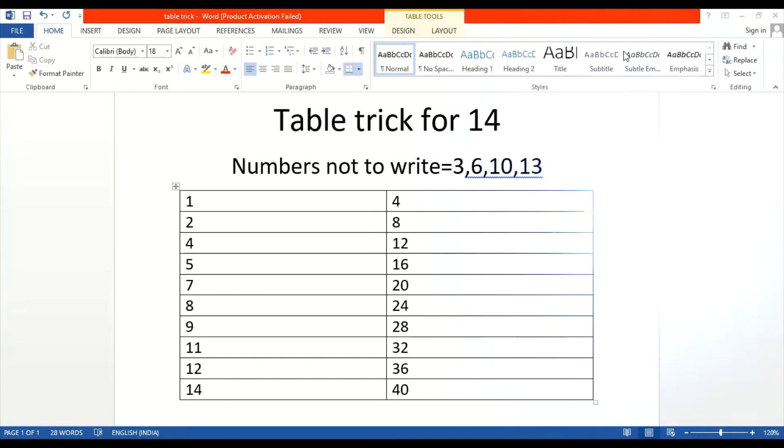So guys, I have wrote the table of 4. Now we will take one place number and place it here. So first is 4, I will write here 4. Then there is one number only so I will write here 8.